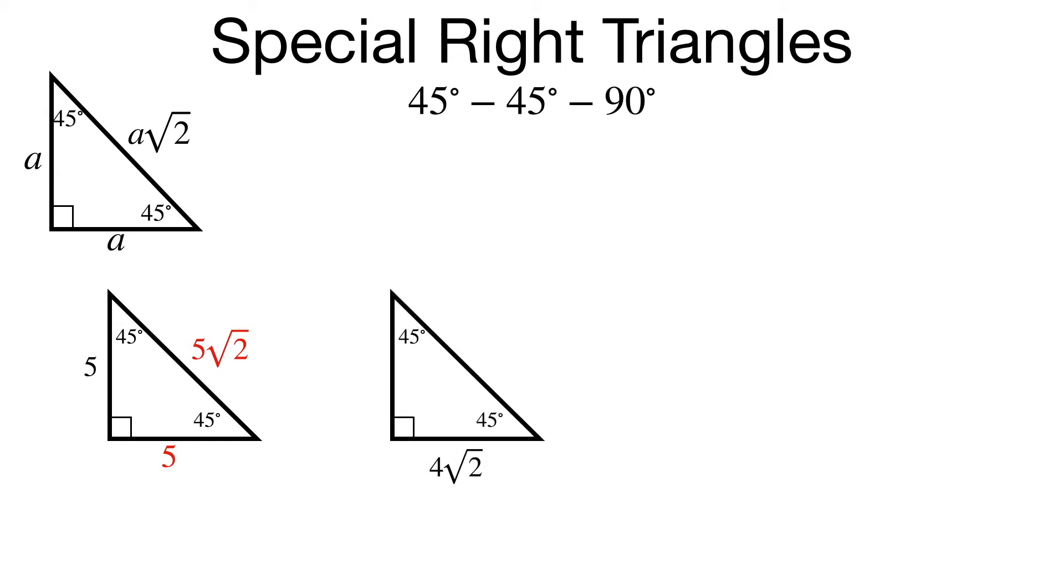In our second example, I also know a leg length, so just like in the previous example, the other leg will also be 4 square root of 2, but we have to be careful when we calculate our hypotenuse because it's 4 square root of 2 times the square root of 2. So I'm going to do a little scratch work to remind us how to do that.